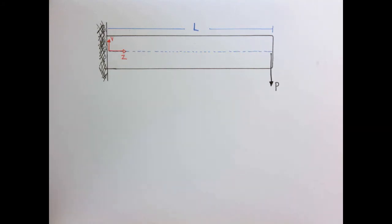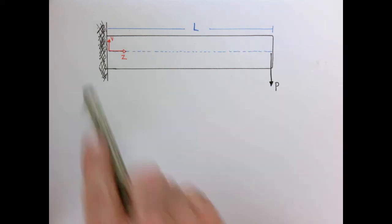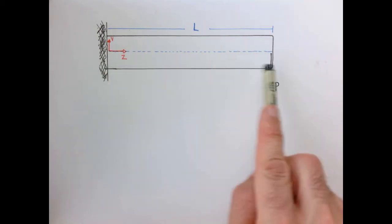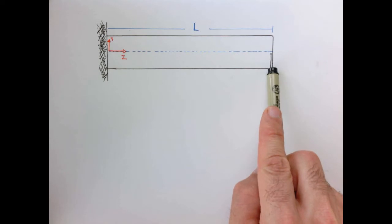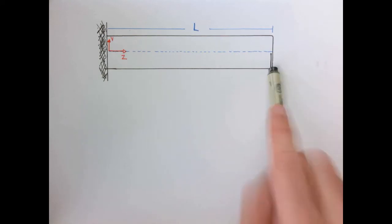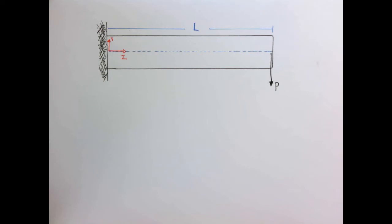Let's look at the example of stress in a cantilever beam. When we have this configuration — anchored to a wall with a load applied at the end of the beam — there are some similarities but quite a bit of difference compared to the case of a beam in pure bending.